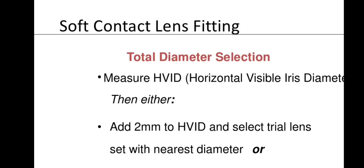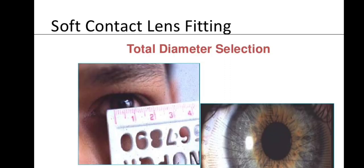To determine total diameter of a soft contact lens, measure the corneal size horizontally — the HVID (Horizontal Visible Iris Diameter) — from temporal limbus to nasal limbus, using a ruler or auto-refractor. Add 2 mm to the HVID to select the trial lens. For example, if HVID = 12 mm, total diameter = 14 mm.